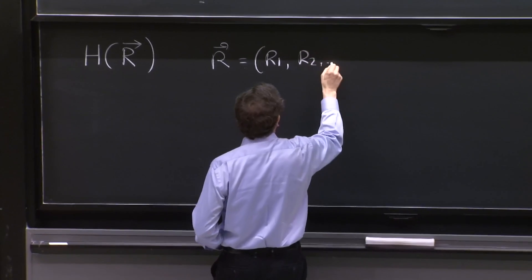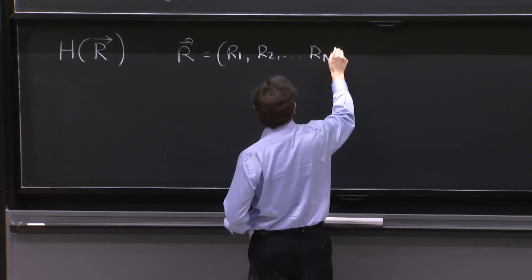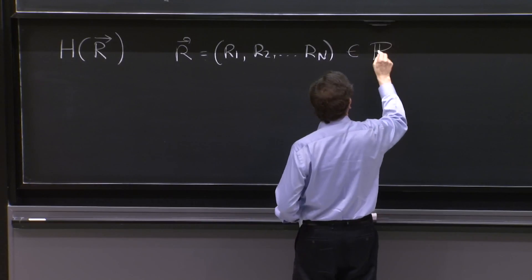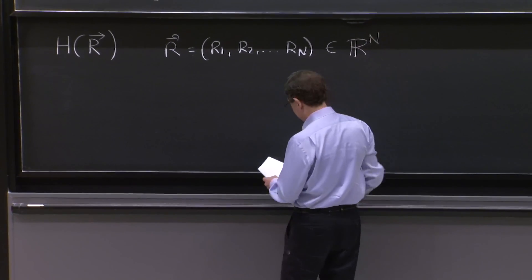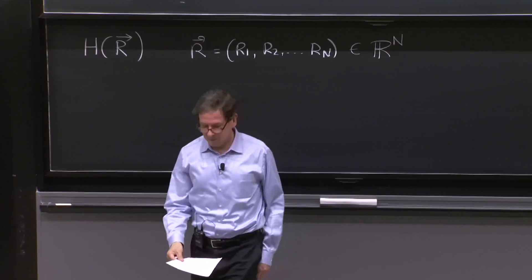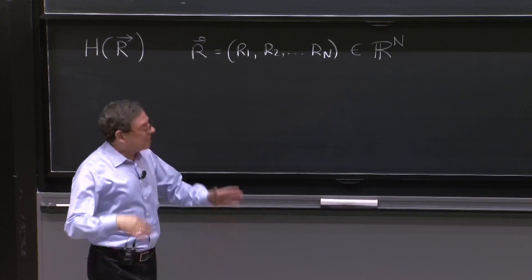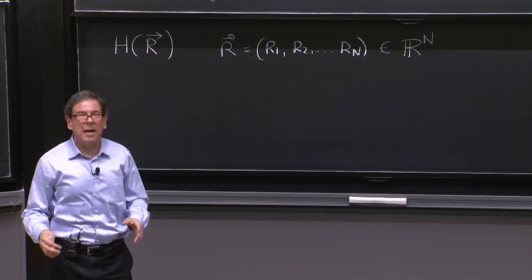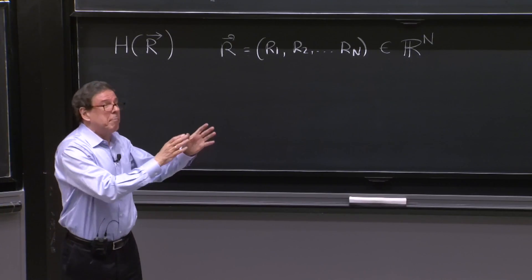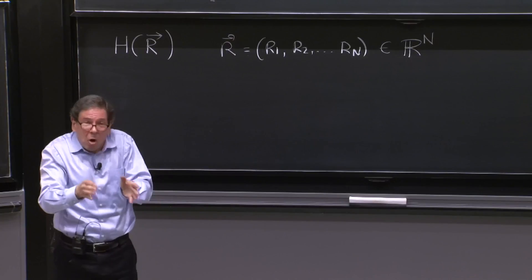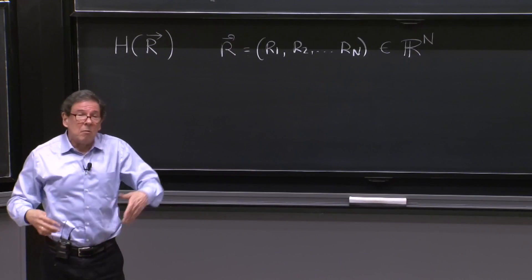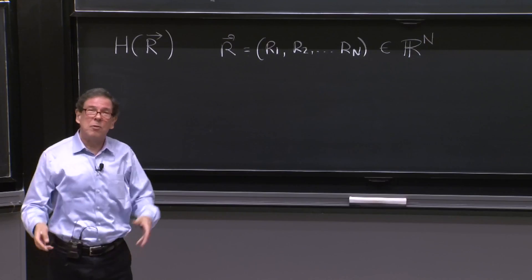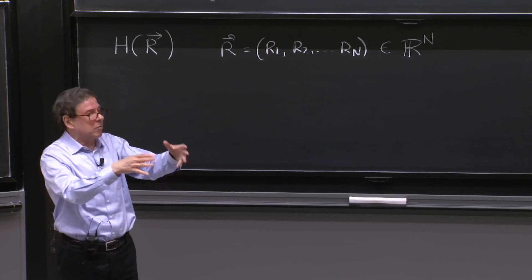So the r's are some coordinates, r1, r2, maybe up to r capital N are some coordinates inside some vector space, rn. So it's n components. And what does that mean? It means maybe that your Hamiltonian has capital N parameters. And those are these things. So you buy this Hamiltonian, and it comes with some parameters.